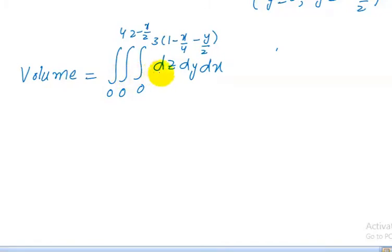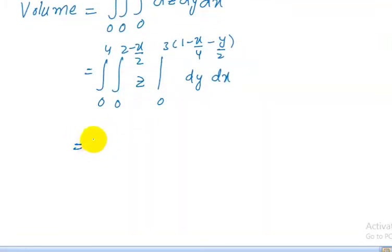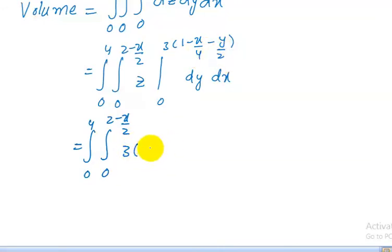First we partially integrate with respect to z. Integrating dz gives z evaluated from 0 to 3(1 − x/4 − y/2), which becomes 3(1 − x/4 − y/2). So the integral reduces to: ∫₀⁴ ∫₀^{2−x/2} 3(1 − x/4 − y/2) dy dx.